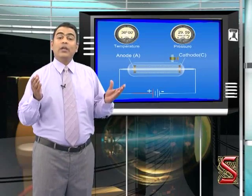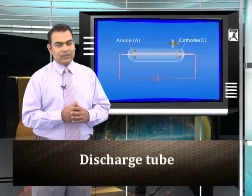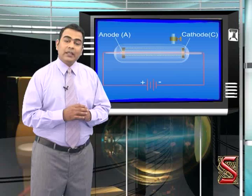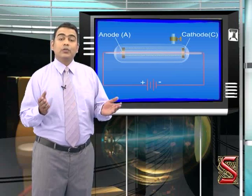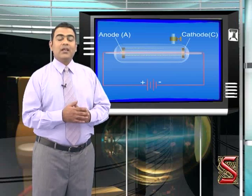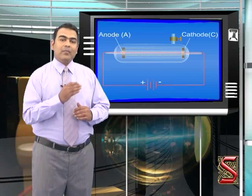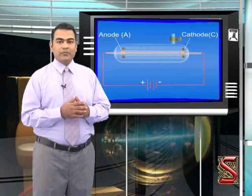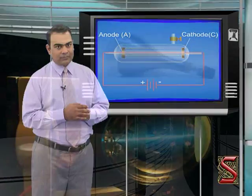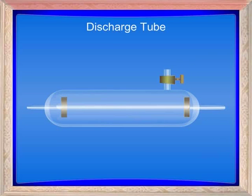All gases, including air, are bad conductors of electricity under room temperature and pressure, but these gases can become conductors at very low pressure and high electric potentials, which led to the invention of the device known as the discharge tube. A discharge tube is useful in the study of conduction of electricity through gases. The pressure inside the tube can be varied and the gas to be filled can also be changed.